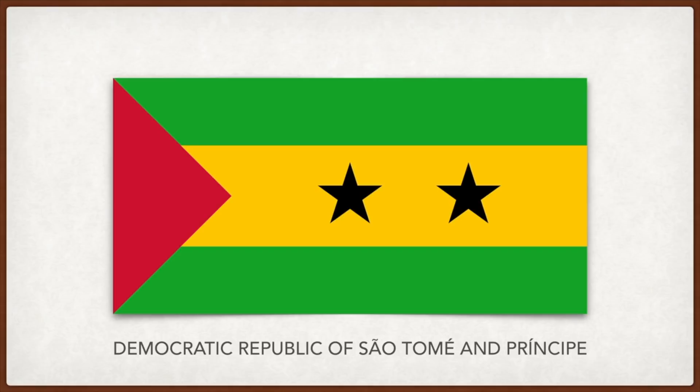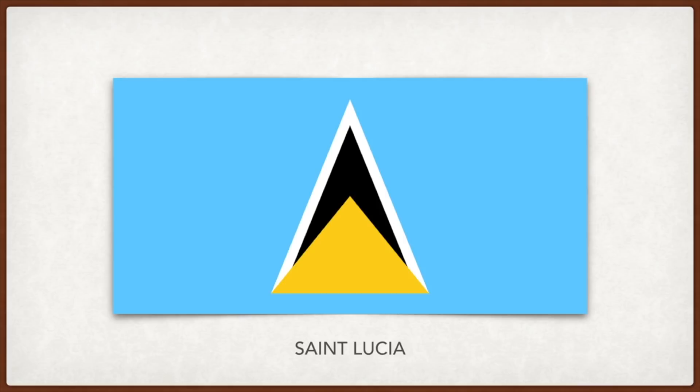Saint Lucia: the blue represents the water that surrounds the island — the Atlantic Ocean and the Caribbean Sea; the white and black colors represent harmony among the races living in Saint Lucia; the yellow represents the constant sunshine; and the black triangle shape represents ancient volcanic cones found in the southwest of the country.